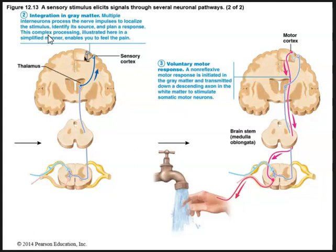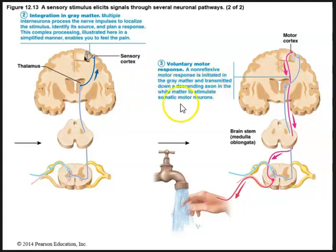This is complex processing. We think: okay, this is pain — what am I going to do? We can see it illustrated here in a simplified way. First, it enables you to feel pain. Then you have the voluntary motor response, which is to stick your finger underneath some cold water. This is a non-reflexive motor response, initiated in the gray matter and transmitted down the descending axon in the white matter to stimulate the somatic motor neurons — to move your hand under cold water, grab some ice, clean the wound and dress it. So that is the parallel response along with that polysynaptic withdrawal reflex. Not only are we automatically taking our hand away from the pain, but we are also feeling the pain and coming up with ways to deal with it.